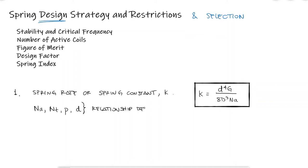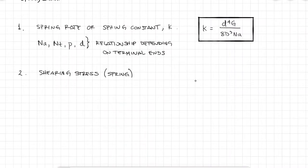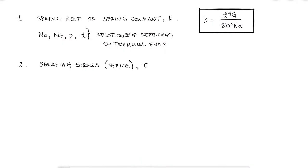Terminal ends options for compression springs. The second one has to do with calculating stresses, specifically the shearing stress, the only kind of stress present in a compression spring while being compressed, and to find it, you find the spring index and the curvature correction factor Kb.